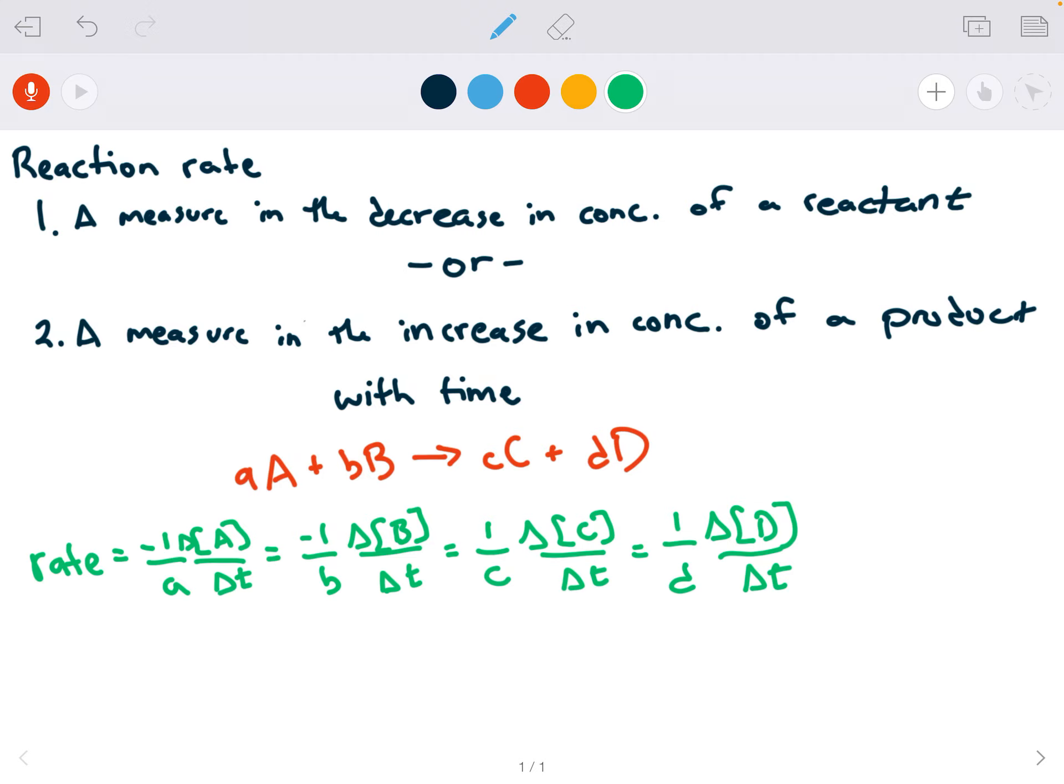Notice a couple things with this equation. You have negative 1 over a and negative 1 over b, but then it's positive for 1 over c and for 1 over d. The negative is because you're losing reactant, and when you're losing reactant, you have to have a negative change in that concentration.